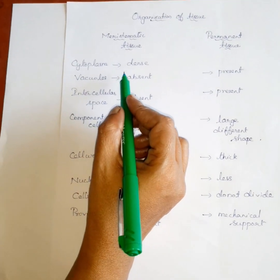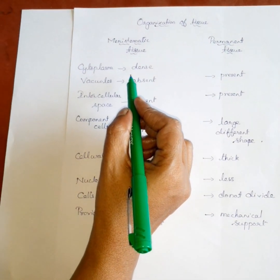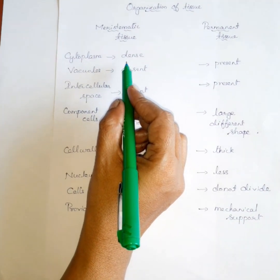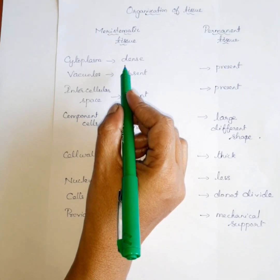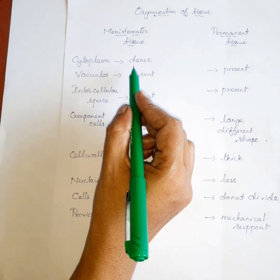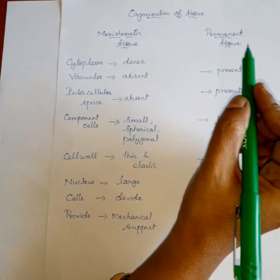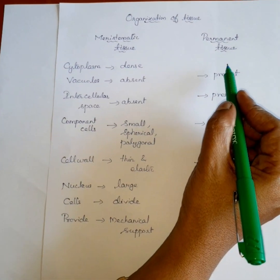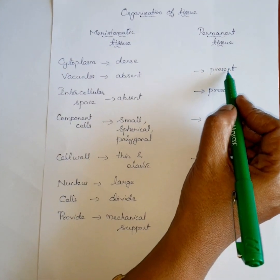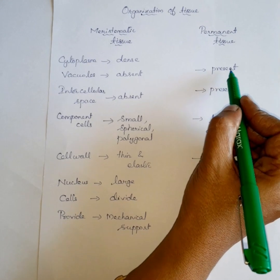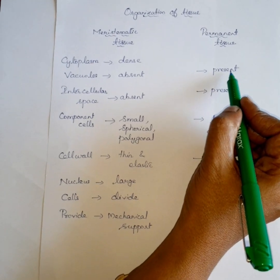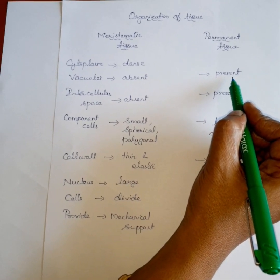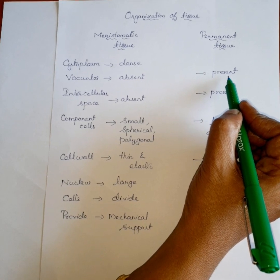First point: in meristematic tissue, the cytoplasm is dense and vacuoles are nearly absent. But in permanent tissue, they have large vacuoles and they are living in the permanent cell.